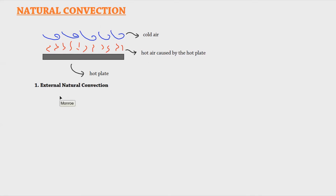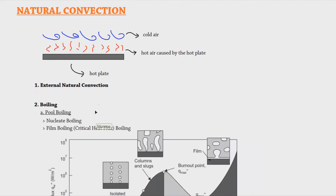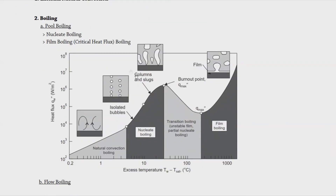In natural convection we will tackle external natural convection — convection that happens on the exterior of various geometries — including vertical plates, horizontal plates, and horizontal and vertical cylinders. Boiling is one of the best examples of natural convection; your teachers in high school or elementary would explain convection using examples like sea breeze or atmospheric inversion. There are two types of boiling: pool boiling and flow boiling.